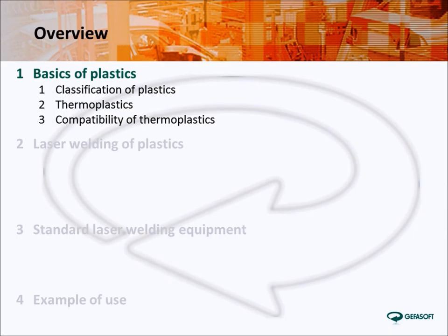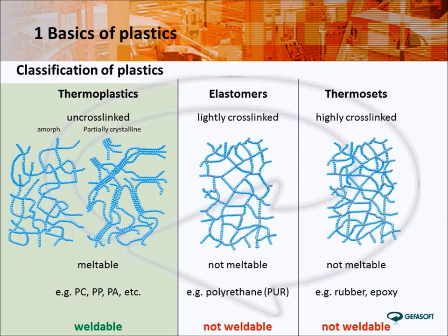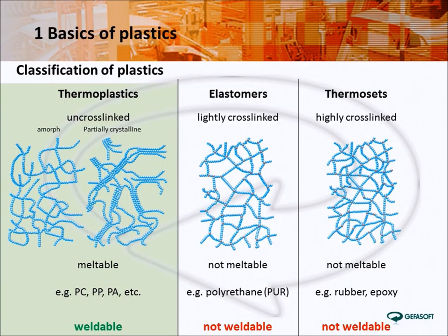Let's start with the basics of plastics first. Plastics can be generally divided into three different classes: the thermoplastics, elastomers, and thermosets. Thermoplastics show no cross-linked molecular chains, which causes the materials to be meltable and harden again without thermal corrosion. Therefore, one of the basic requirements to make these materials weldable is fulfilled.